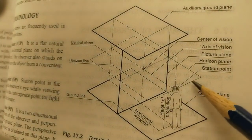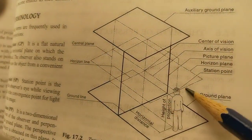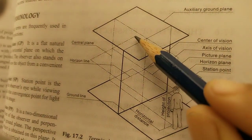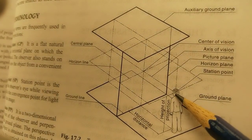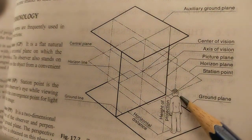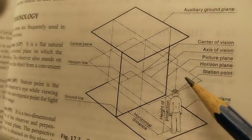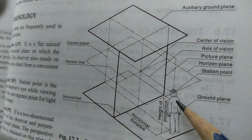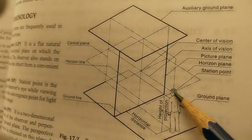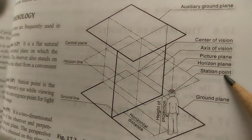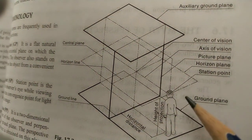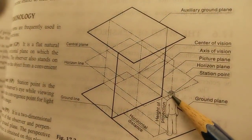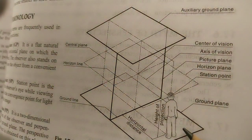There is one more horizontal plane which is imaginary and passes through the observer's eye. This horizontal plane passing through the eye of the observer is called the horizontal plane. The ground plane is where the observer stands, and the observer's eye is called the station point. The plane passing through the eyes is the horizontal plane.